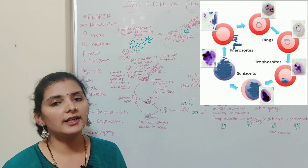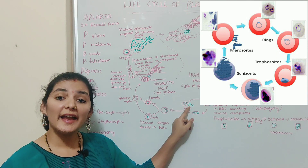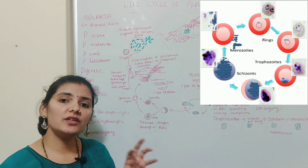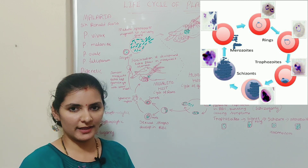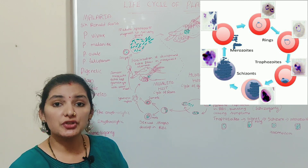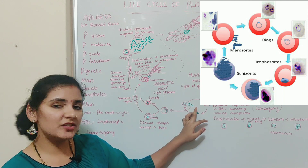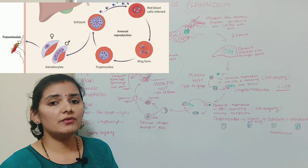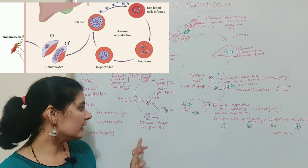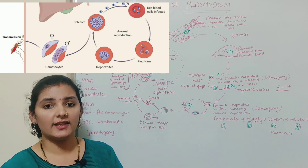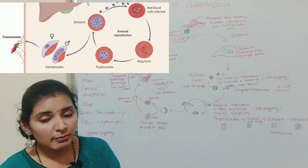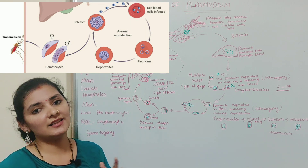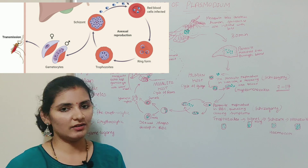These merozoites are released into the bloodstream by bursting of the RBC. Along with the merozoites, the brown pigment hemozoin is also released into the bloodstream. Because of the release of this toxic hemozoin, it causes the symptoms of malaria — chills and fever — which reoccur every 3 to 4 days. The merozoites again infect fresh RBCs. However, some merozoites instead of infecting fresh RBCs form gametocytes — macrogametocytes (female) and microgametocytes (male). Further development of gametocytes takes place in the stomach of the female Anopheles mosquito; otherwise they disintegrate.